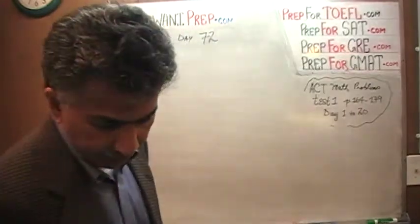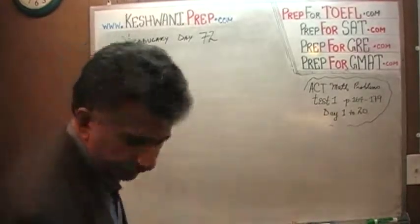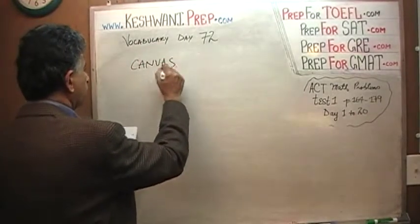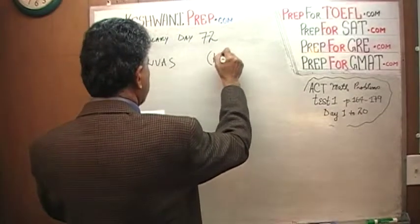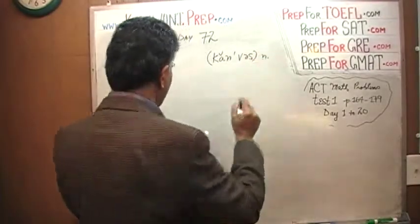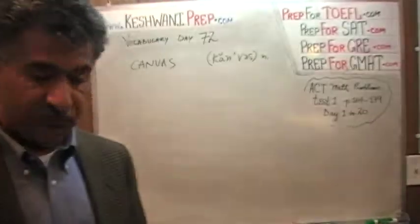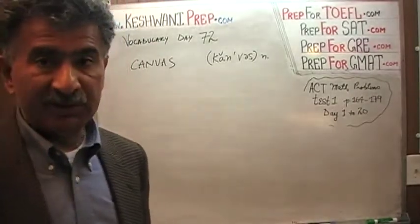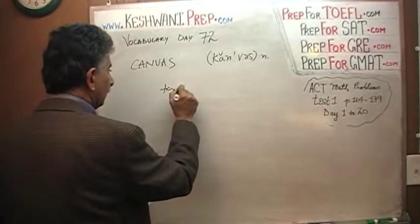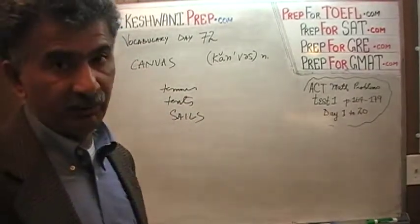The very first word we want to learn today is a very straightforward word. The word is 'canvas.' This word is in fact very straightforward, very simple. You know what a canvas is — it's something we use for painting, or it's a material you can make tents out of, sails for boats, and so forth. That canvas is very straightforward; everybody knows that.